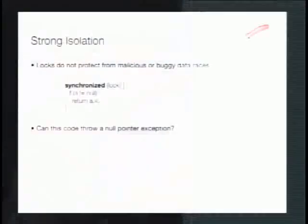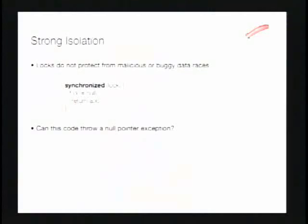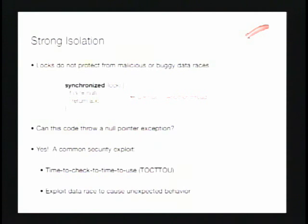Another problem with locks is that they don't protect very well from malicious or buggy data races. For example, with lock-based code that checks whether a is not null and returns a.x — can this code ever throw a null pointer exception? Absolutely. Another thread could alter a between the check and the access and set a to null without acquiring the lock. This is actually a common security exploit called time-to-check to time-to-use, or TOCTOU. It exploits a data race to generate unexpected behavior the programmer never anticipated.